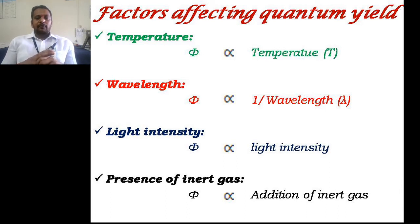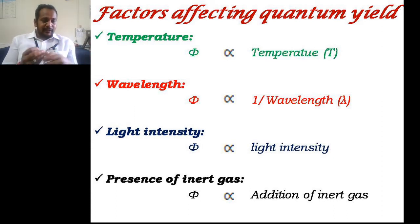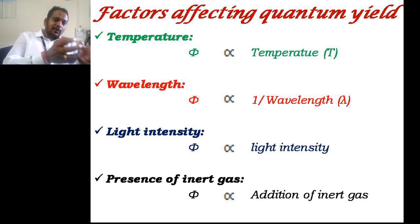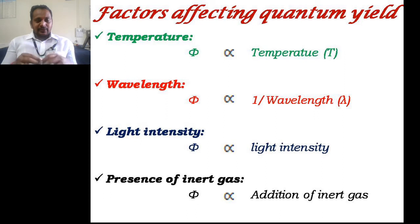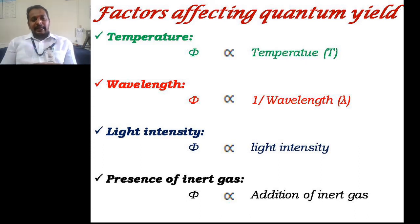The last factor affecting quantum yield is the presence of inert gas. Due to addition of inert gas, maximum electromagnetic radiation within the reaction system is utilized for the reactant molecules, because inert gas does not interfere or interact with the radiation. So most of the radiation is utilized for photochemical changes, meaning maximum number of molecules react. Since number of molecules reacted is directly proportional to quantum yield, quantum yield increases. Thus, quantum yield is directly proportional to the addition of inert gas.